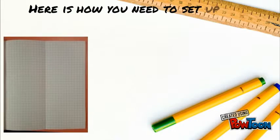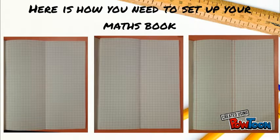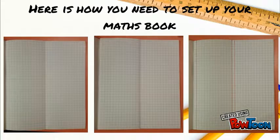This is how to set up your maths book. First, fold your page in half. Then, on either side of that, you need to draw a red line to create the margins. Next to the edge of the page, you also need to create another margin. All of these are done with a red pen and a ruler.